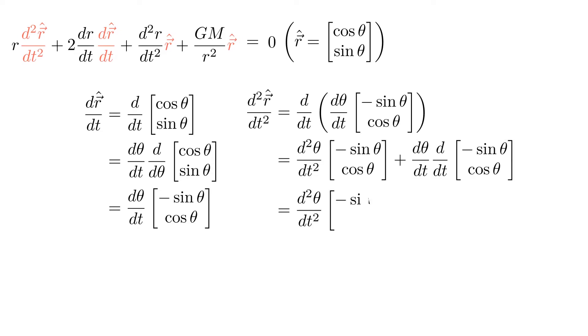We can then differentiate this expression with respect to t again to obtain the second derivative of r hat. We apply the product rule again, and then the chain rule, and we finally obtain the vectors as shown.